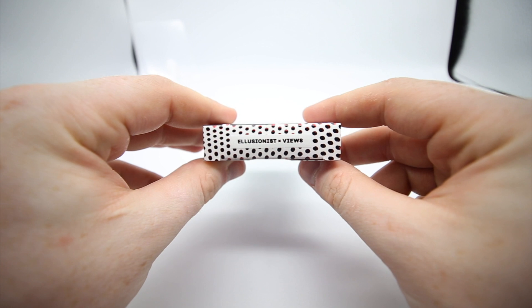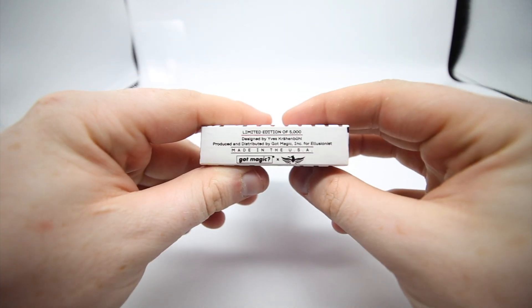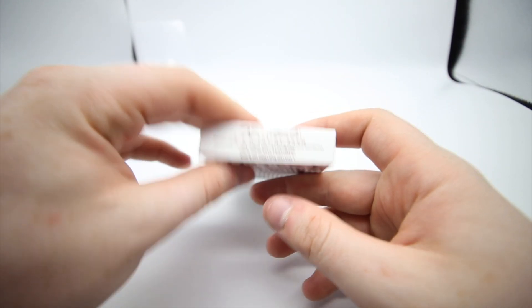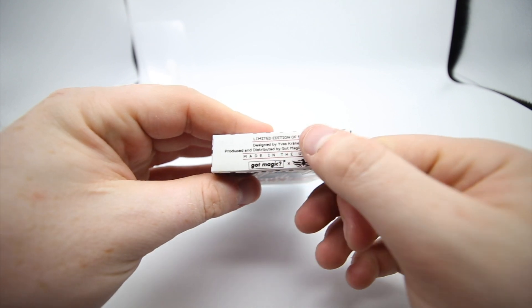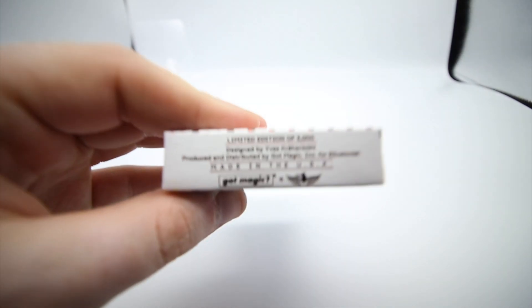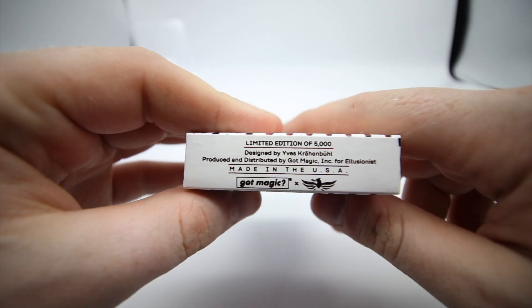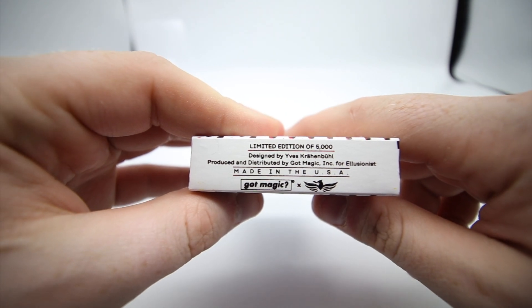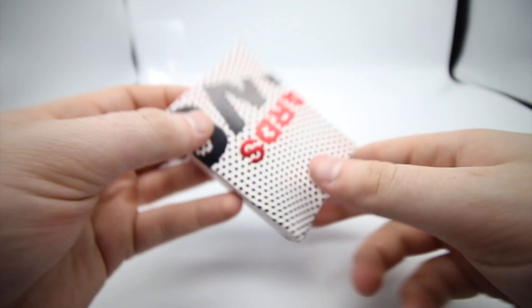On the top it has 'Illusionist Views,' and on the bottom it just has the Illusionist logo. Then it has 'Got Magic Limited Edition,' as you can see. One of 5,000. It says 'designed' and then 'produced and distributed by Got Magic Inc for Illusionist.' Really, really cool.